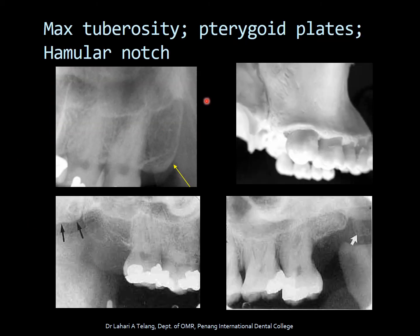The maxillary tuberosity is indicated by the yellow arrow mark — it is literally the end of the maxilla. The pterygoid plates are indicated by the black and white arrow marks, and the notch-like area is called the hamular notch.